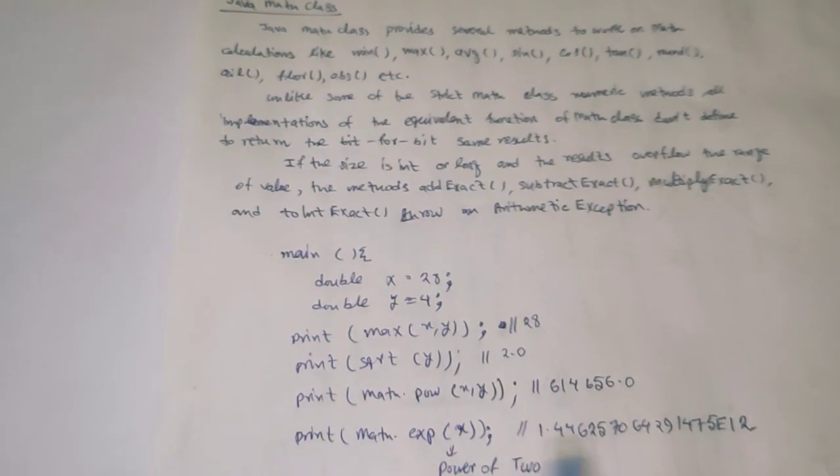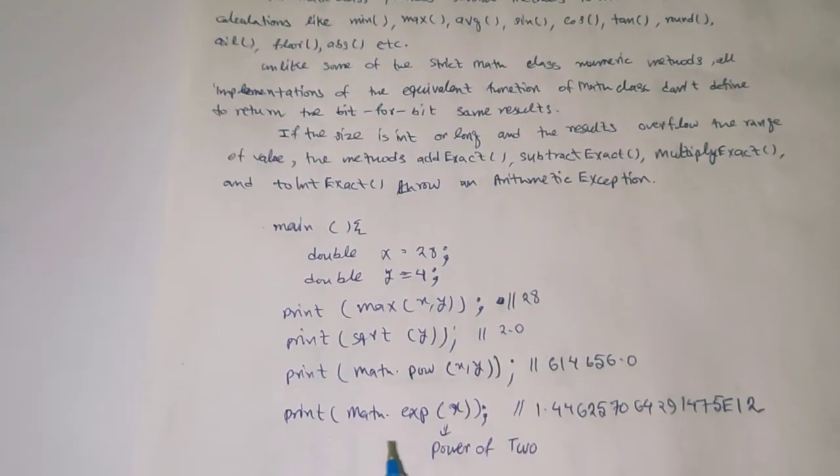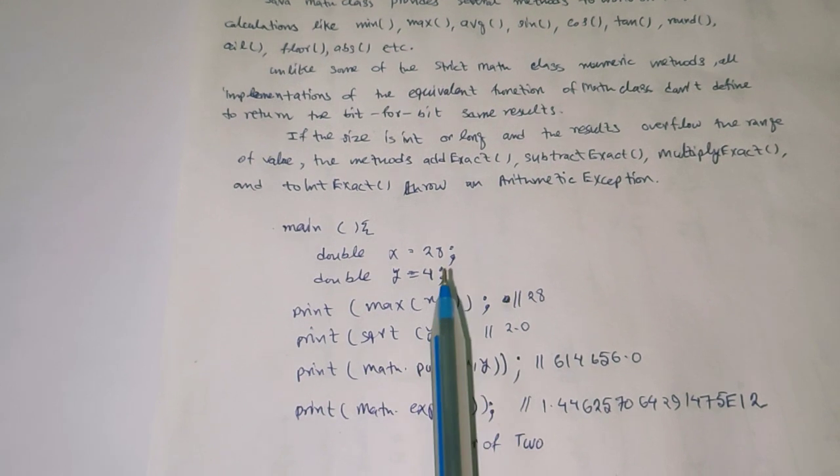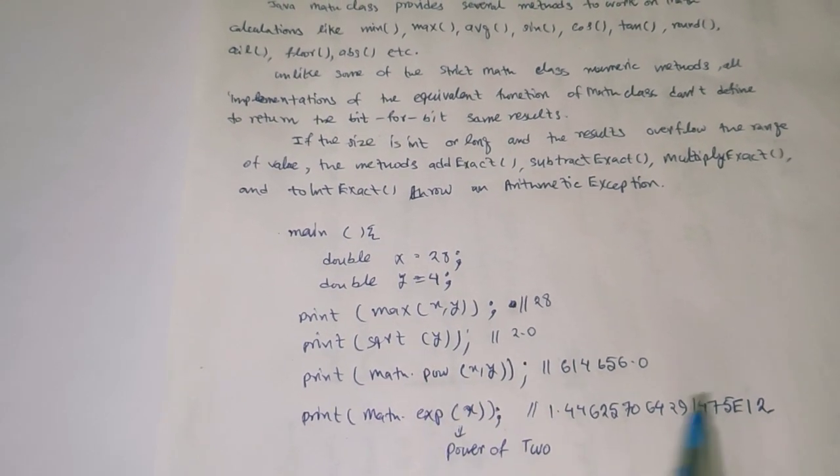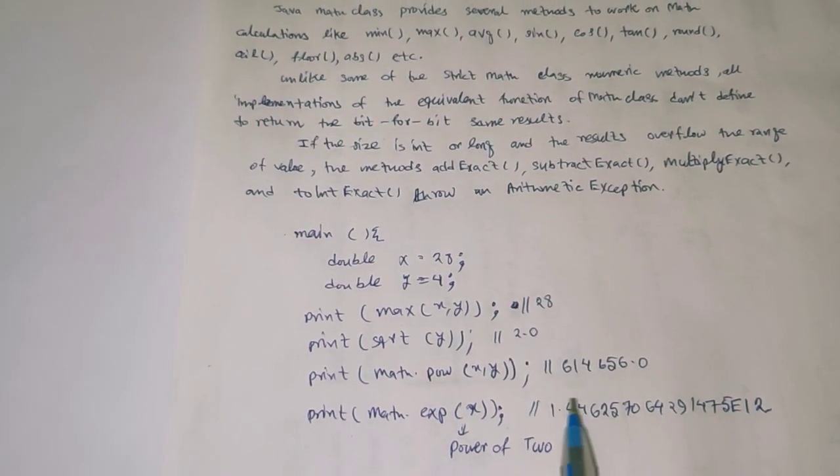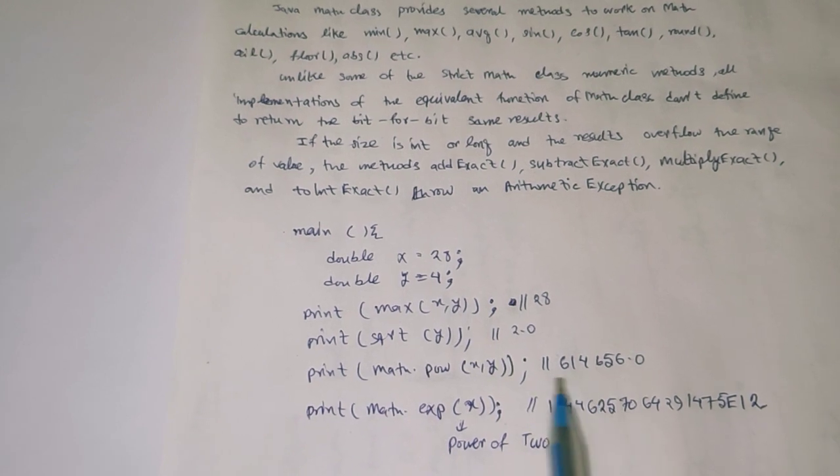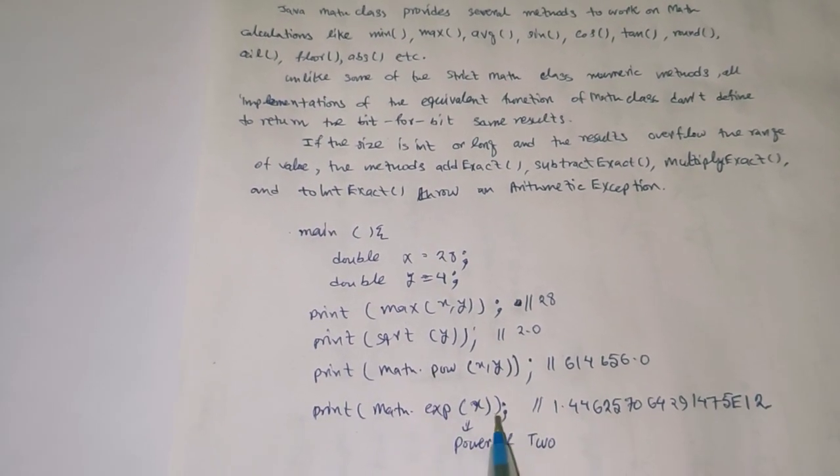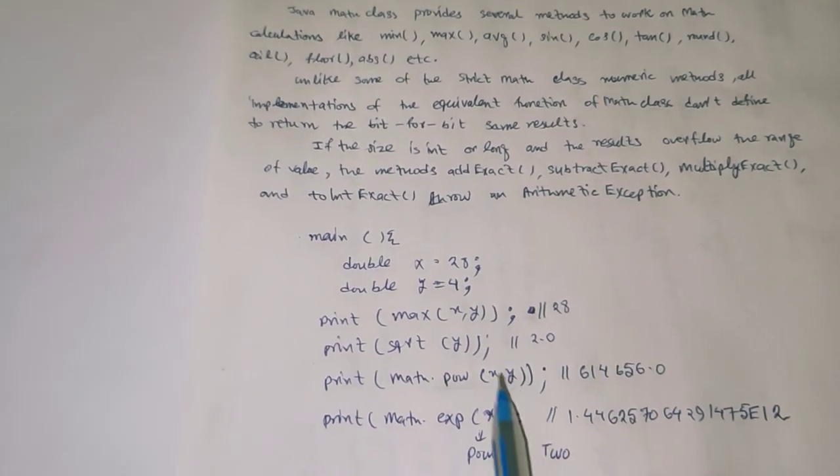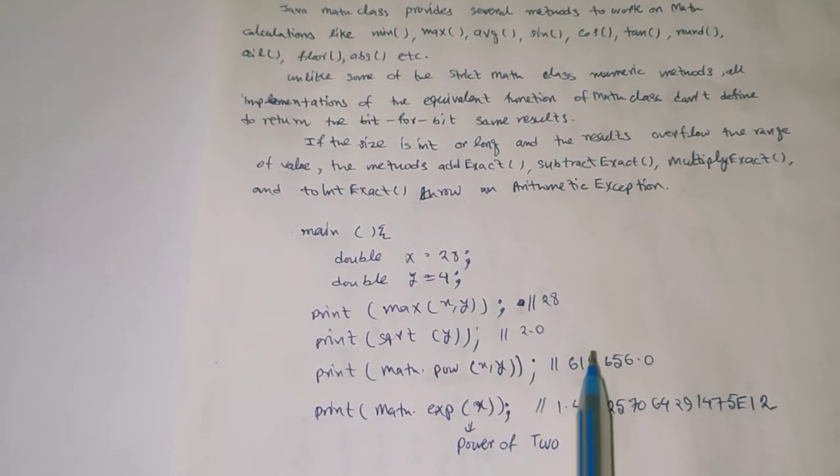Print Math exponential of x. This is the power of x to the power 2. The value of x to the power 2 means 28 to the power 2 is the value.